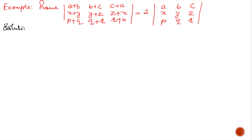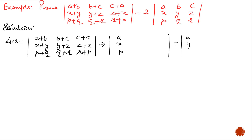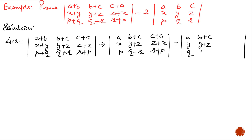First we take the left hand side. We know that when we break a determinant into two determinants, two columns remain the same and we break the third column. Here we are going to break the first column, which has (a+b), (x+y), (p+q). So when we divide into two determinants, the first determinant gets a, x, p and the second gets b, y, q. The remaining two columns remain the same in both determinants.